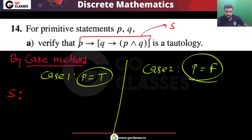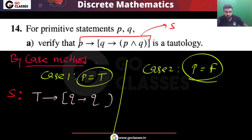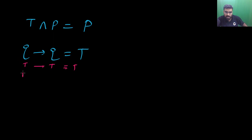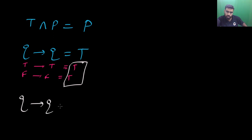In case 1, when P is true: true implies (Q implies P∧Q). Since P is true, true and Q equals Q, so we get Q implies Q. Q implies Q is always true — if Q is true, true implies true is true; if Q is false, false implies false is also true.